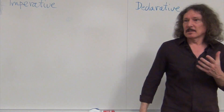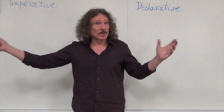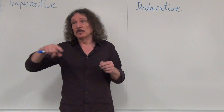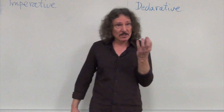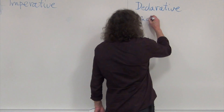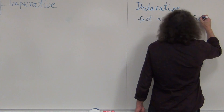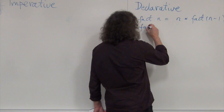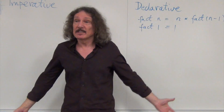Another example is that in imperative programming we write loops. If we want to go through a certain sequence we will have some iterator or index and keep incrementing it and moving to the next place. Whereas in declarative programming we usually use recursion, and recursion is closer to the definition. For instance, if you want to write a recursive definition of factorial, you will say factorial of n equals n times factorial of n minus 1.